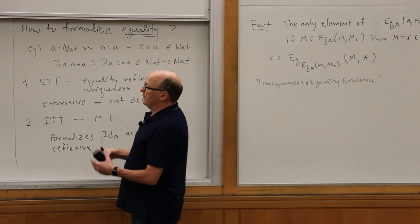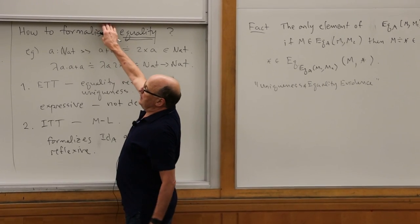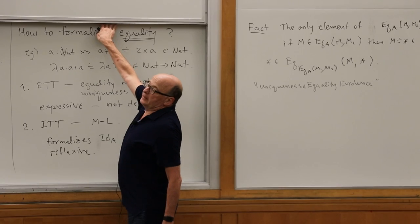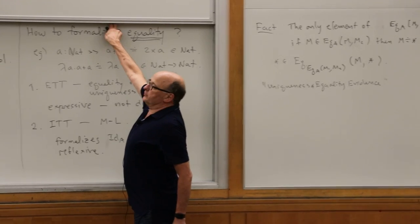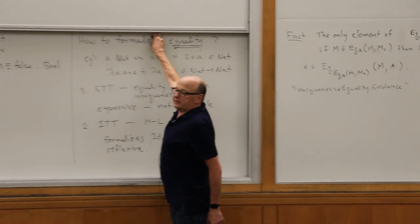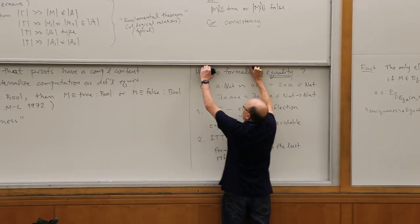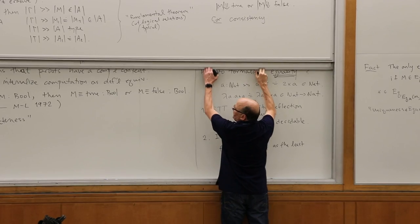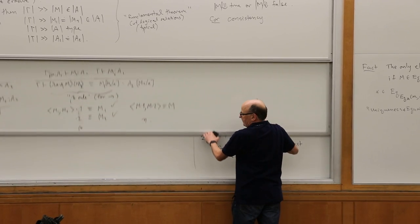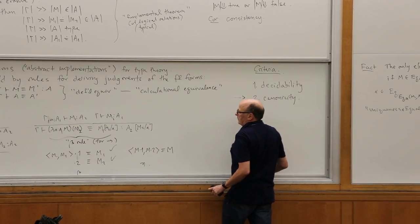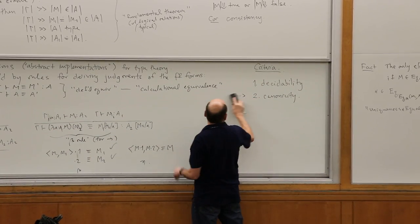We're going to see what happens when we try to do it in a formalism, because it kind of famously doesn't work. On the other hand, the weakness will turn out to be a strength which will turn out to be a weakness — that's where this is going.